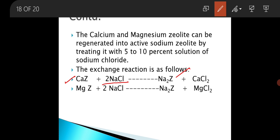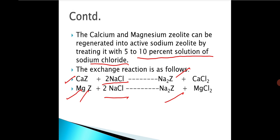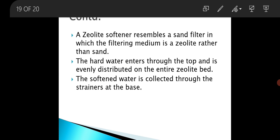Similarly, this magnesium zeolite — the used zeolite — when it reacts with a 5 to 10 percent solution of sodium chloride, it will regenerate the sodium zeolite. A zeolite softener is just like a sand filter in which the filtering medium is zeolite rather than sand.